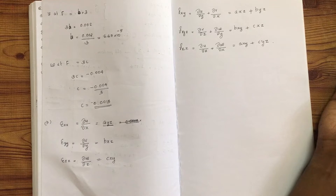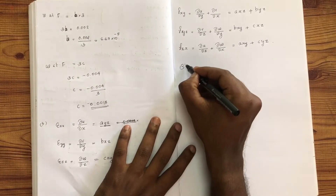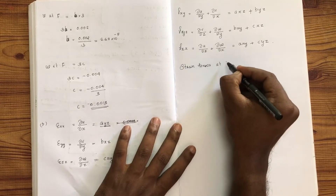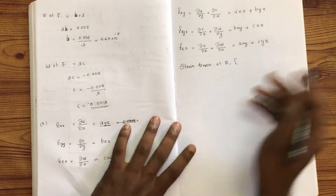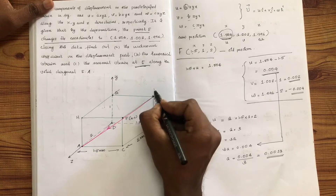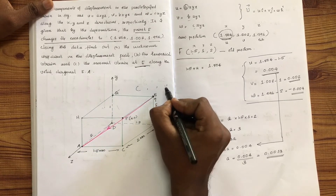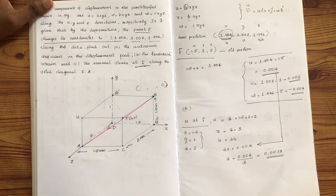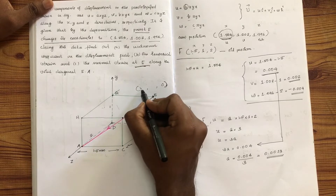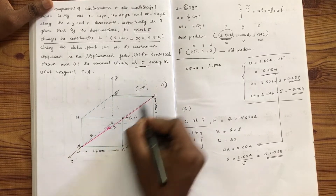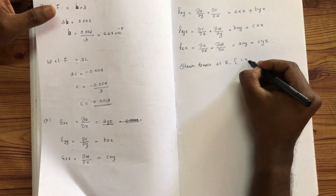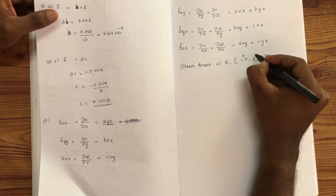Now we substitute the values at F, where x = 1.5, y = 1, z = 2. For epsilon_xx = A·yz = 0.00133 × 1 × 2. For gamma terms, substituting x = 1.5, y = 1, z = 2 into each expression.